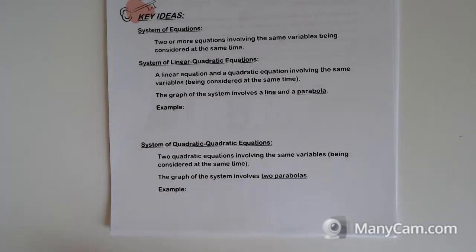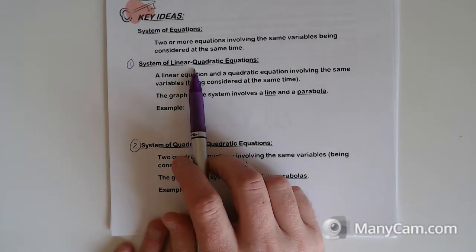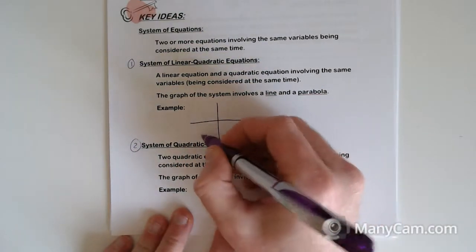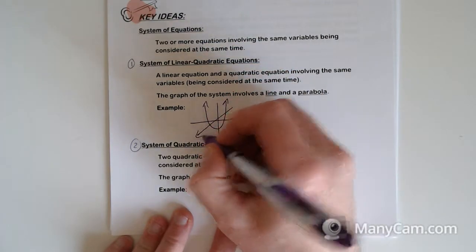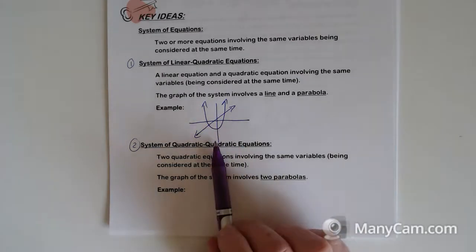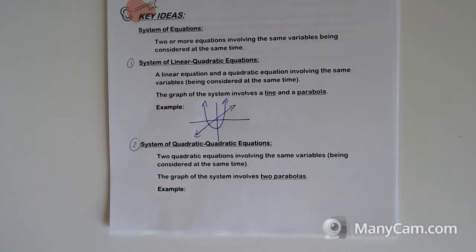A system of a linear and a quadratic equation - you could have a line and some kind of a quadratic. The graph involves a line and a parabola, and they're going to have points of intersection. They could have no points of intersection if the line was too far down. It could have a single point of intersection, and very often they'll have two points of intersection when we're looking for it.